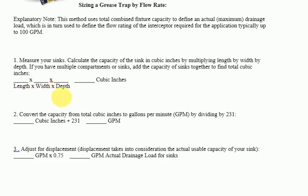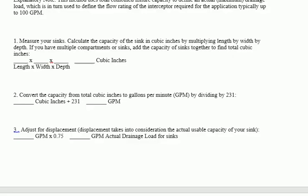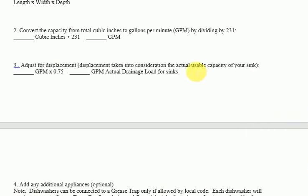Step 2 — Convert the capacity from total cubic inches to gallons per minute (GPM) by dividing by 231. [Cubic inches] ÷ 231 = [blank] GPM.